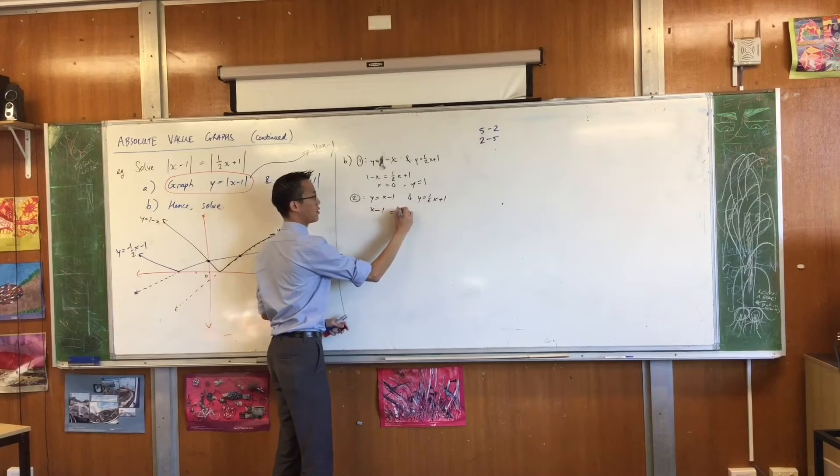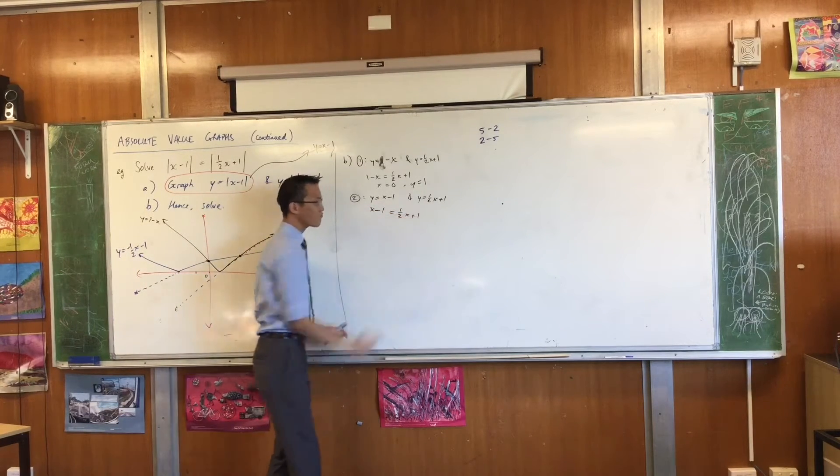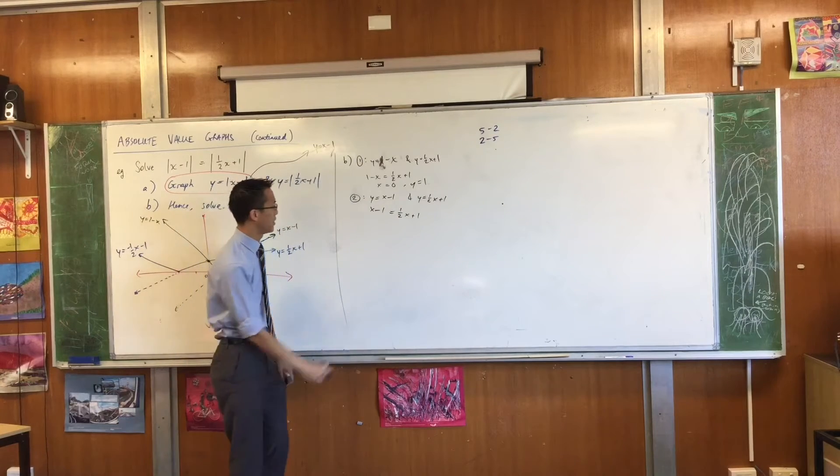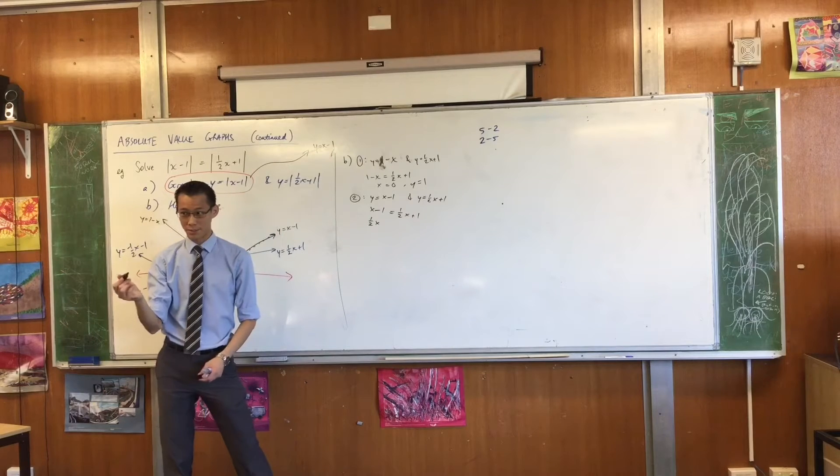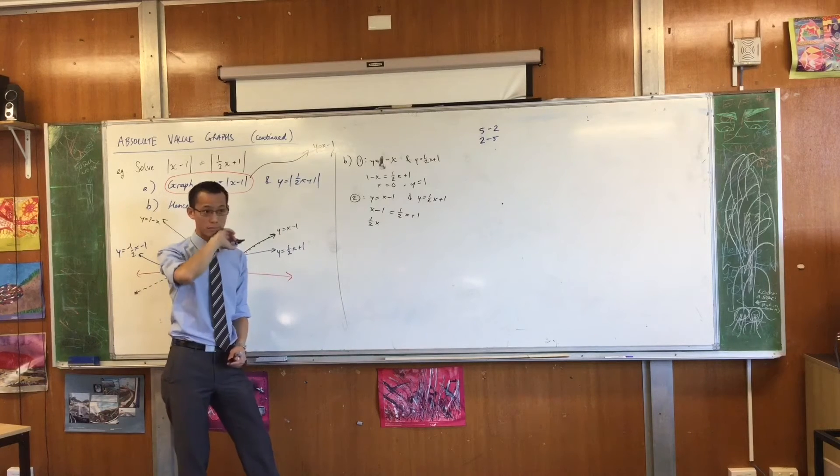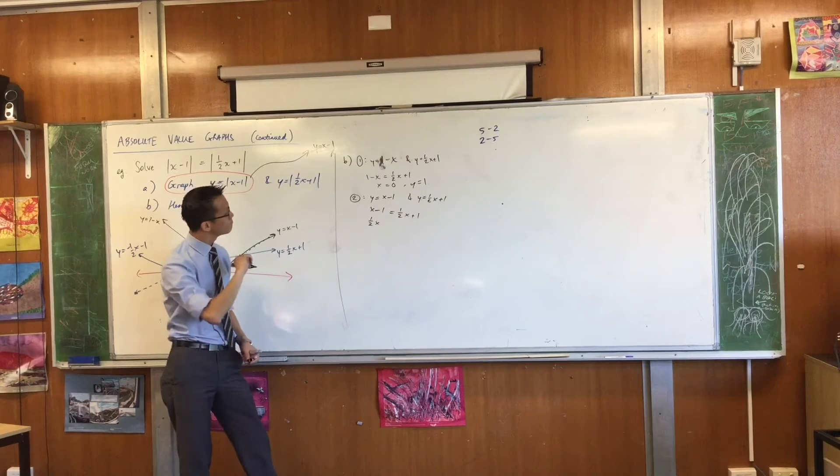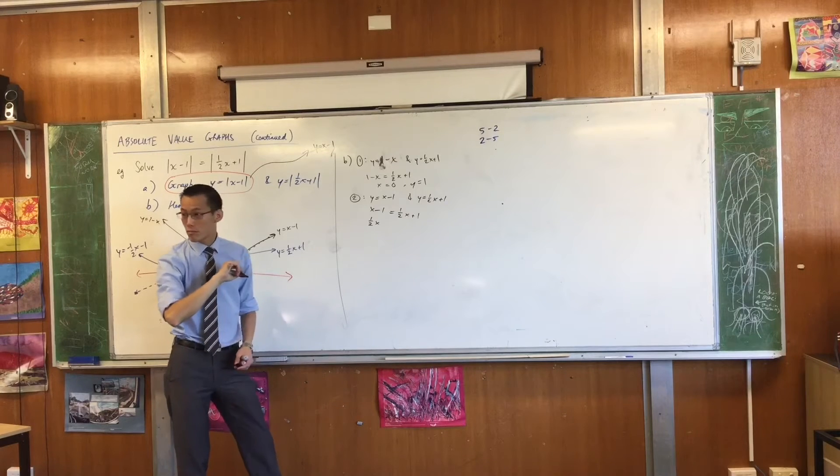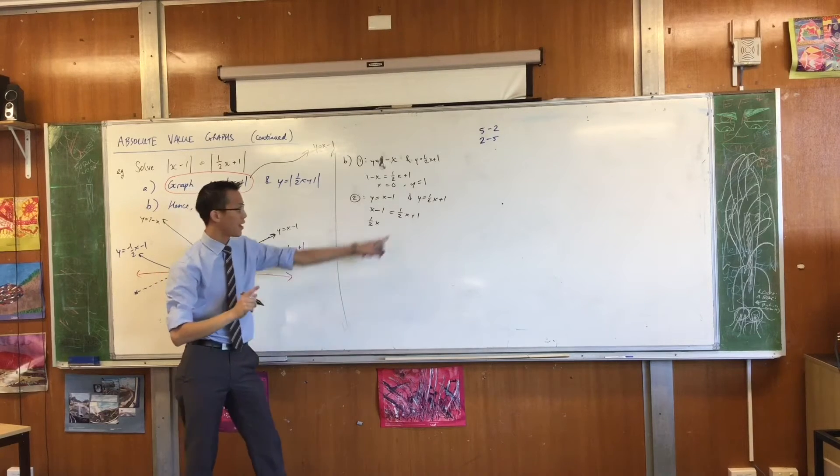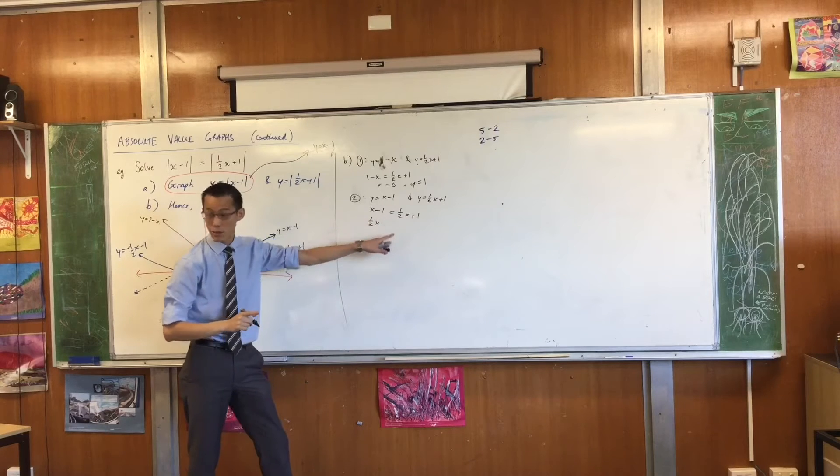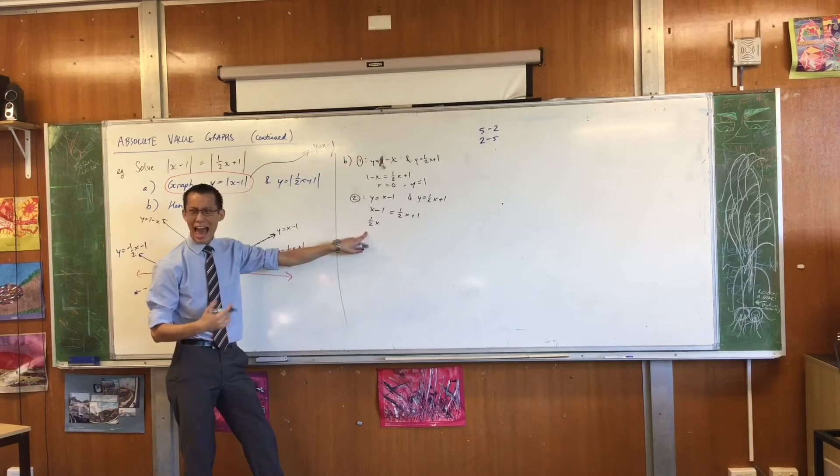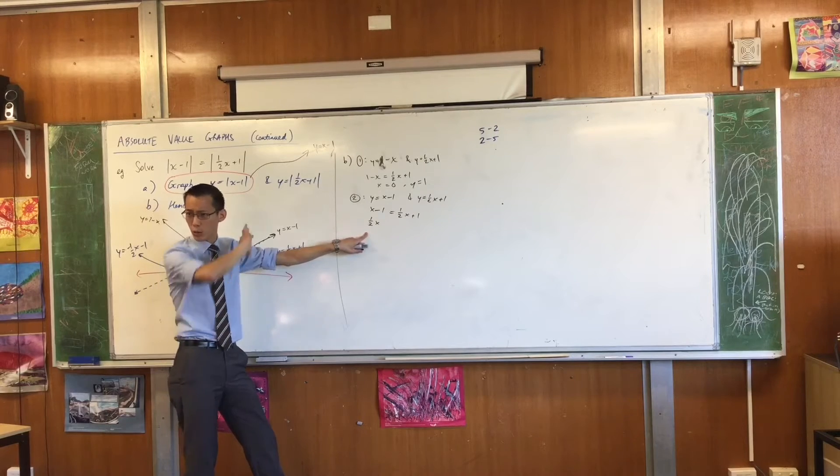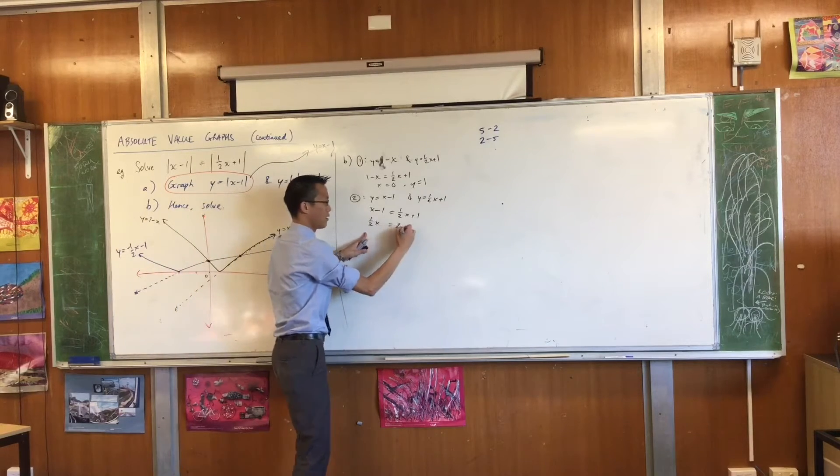So I'm going to, instead of using 1 minus x, I've dealt with that one. There are no more points of intersection. I'm going to deal with x minus 1, and the same half x plus 1 branch that I've dealt with before. So x minus 1 equals half x plus 1. I have to be a little more careful this time. I'll subtract half x from both sides. Now, what would you like me to do?